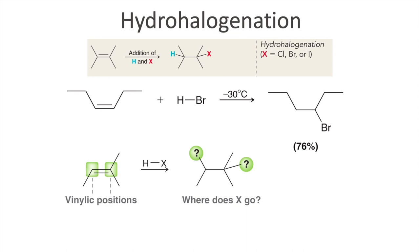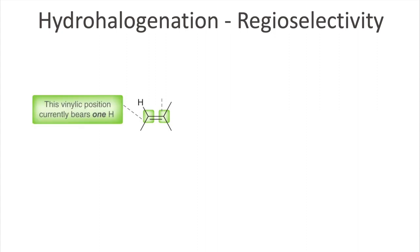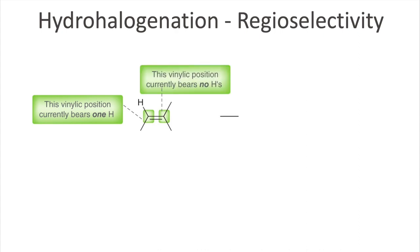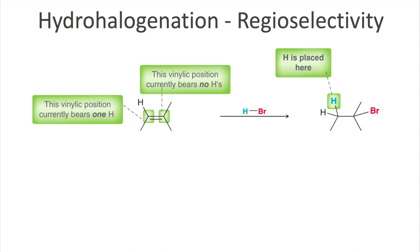Let's zoom into the two vinylic positions. One vinylic position has one hydrogen attached to it — less substitution, fewer carbons attached. Whereas the second vinylic position has no hydrogens, meaning more carbon bonds. There is indeed a preference: the halogen will be added at the vinylic position with fewer hydrogens, and the hydrogen will be added at the position with more hydrogens. Both statements are equivalent.